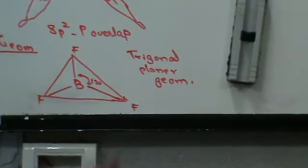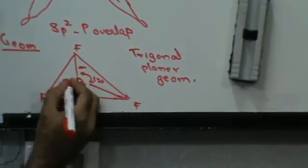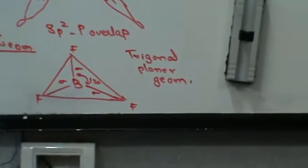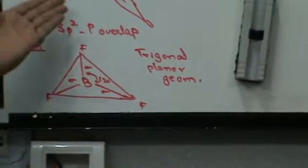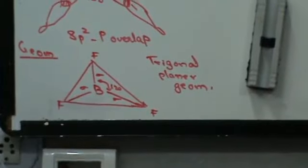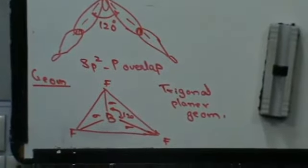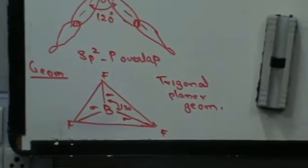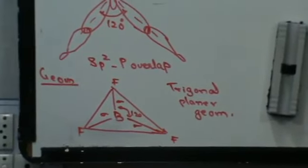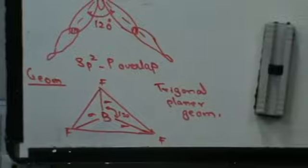The bond is going to be a sigma bond. How do I know this is a sigma bond? Obviously, you can see there is actual overlapping. Only when there is lateral overlapping is there a pi bond. Here there is actual overlapping, so it has to be a sigma bond. So this was sp2 hybridization.